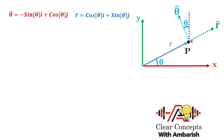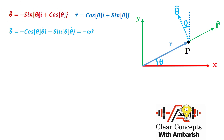Since I'm going to express vectors in terms of theta cap and r cap, I also need the time derivatives of theta cap and r cap. Let's find the rate of change of the tangential and radial unit vectors. Differentiating theta cap with respect to time: the derivative of minus sin theta gives minus cos theta, and since we're differentiating with respect to time there's a d theta/dt, written as theta dot — so minus cos theta times theta dot i cap and minus sin theta times theta dot j cap.